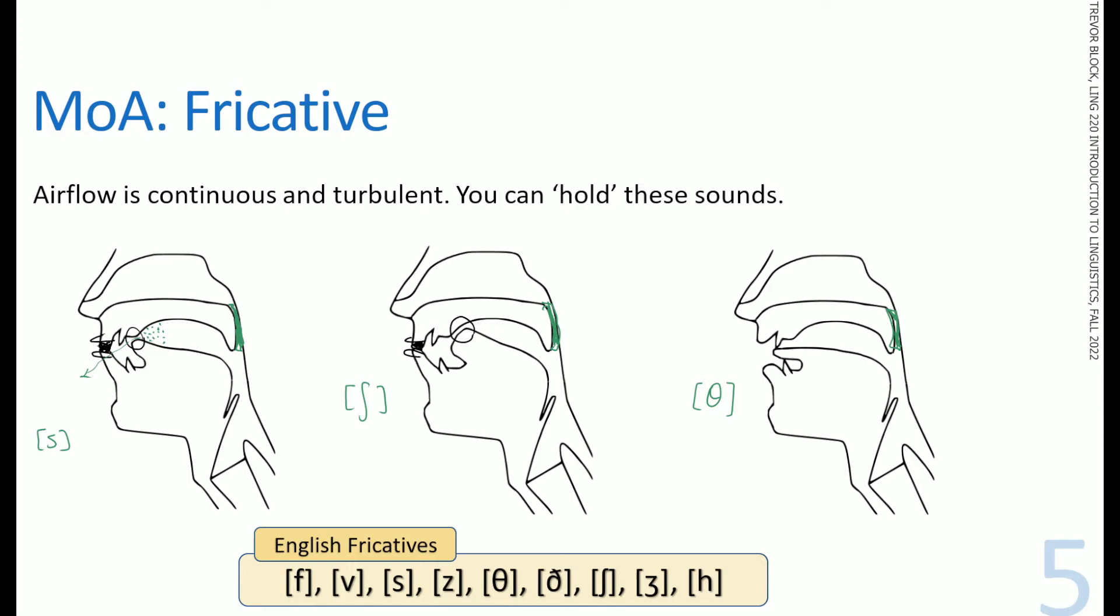But those would be all the fricatives at the bottom too. So f, v, s, z, th, sh, and h. Those are all the ones that we have in English.